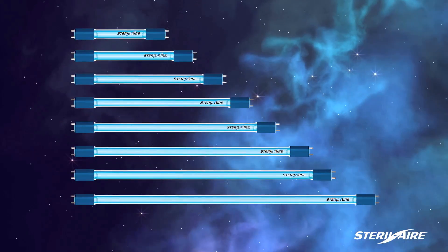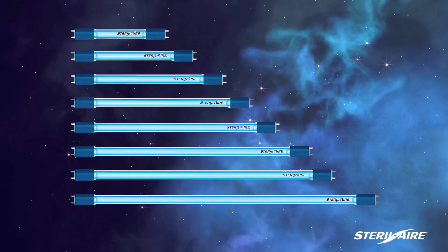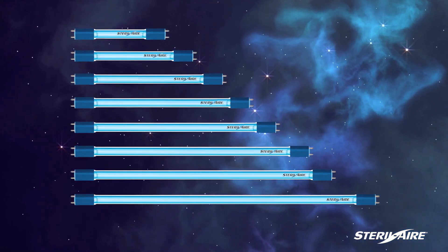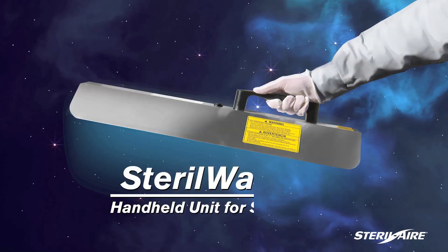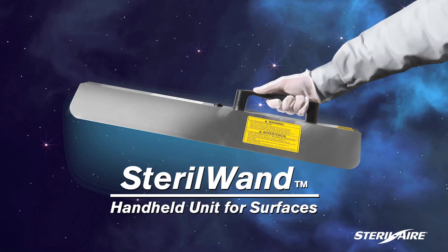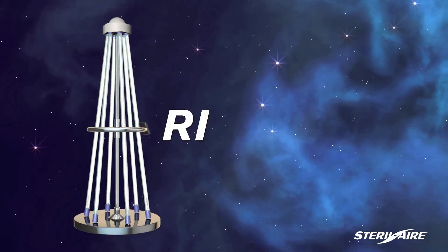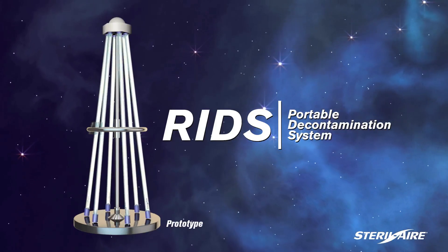Sterile Air has emitter tubes from 7 to 62 inches, 18 to 158 centimeters. The handheld sterile wand is used for surface decontamination, and the portable RIDS unit decontaminates infected areas.